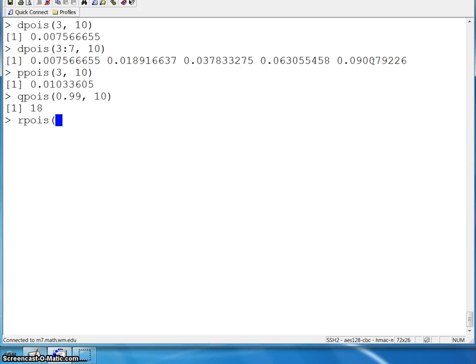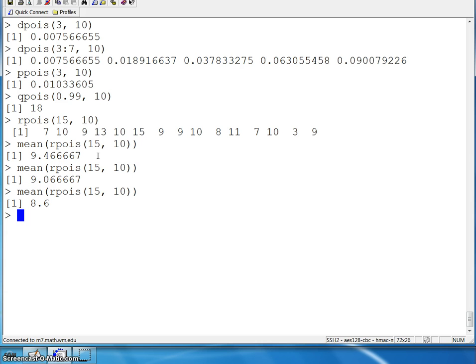Finally, rpois. Here is a string of 15 random Poisson variates coming from a Poisson distribution with lambda equals 10. You can see these range from a small value of 3 all the way up to the largest here, which is 15. You can apply a function like mean to a vector of random Poissons. You expect here some number that's fairly close to 10. It'll jump around 10, of course - sometimes a little bit lower and sometimes a little bit higher.